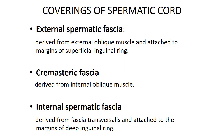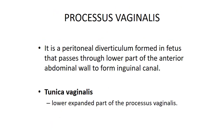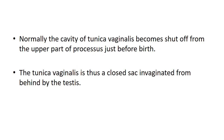Coverings of the spermatic cord: external spermatic fascia, derived from external oblique muscle and attached to margins of the superficial inguinal ring; cremasteric fascia, derived from internal oblique muscle; internal spermatic fascia, derived from fascia transversalis and attached to the margins of the deep inguinal ring. The processus vaginalis is a peritoneal diverticulum formed in the fetus that passes through the lower part of the anterior abdominal wall to form the inguinal canal. The tunica vaginalis is the lower expanded part of the processus vaginalis; its cavity becomes shut off from the upper part just before birth, forming a closed sac invaginated from behind by the testis.